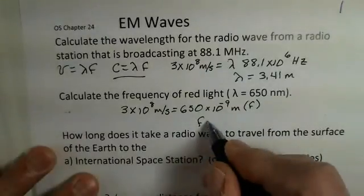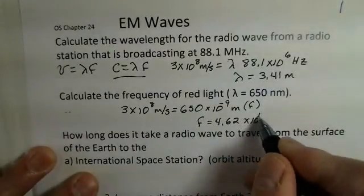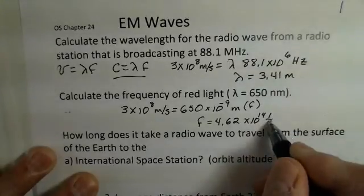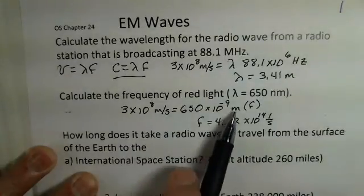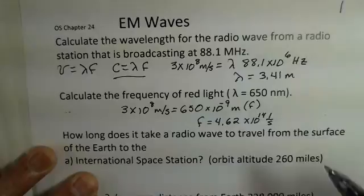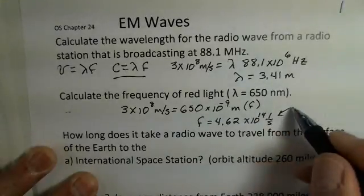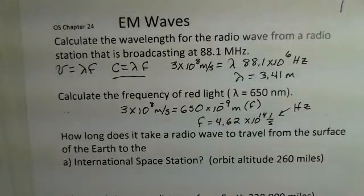And I came up with a frequency of 4.62 times 10 to the 14th. The units here, one over seconds. If you notice, we have meters per second on the left for the speed of light, dividing by meters for the wavelength. We're left with one over seconds. And the one over seconds is the hertz unit. The hertz in fundamental terms is one over seconds.